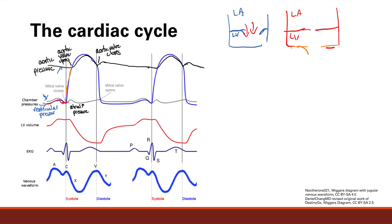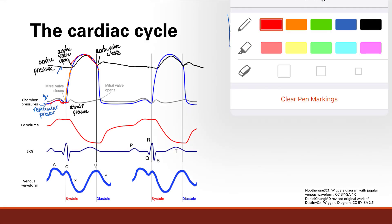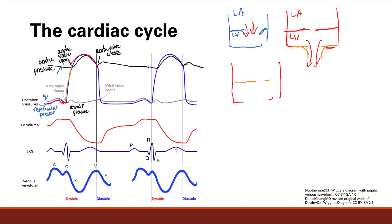At that point the aortic valves will open up and blood will be able to flow out. The pressure keeps going up because the left ventricle is still pushing and squeezing. Until enough blood goes into the aorta, the pressure goes down below the aortic pressure, at which point the aortic valves will close again.